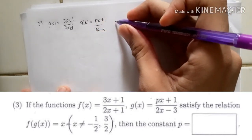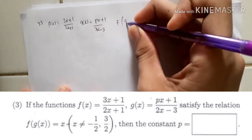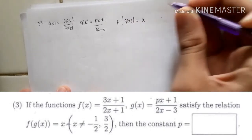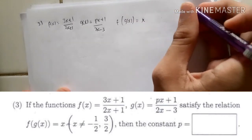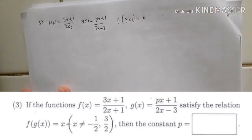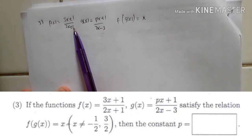They satisfy the relation f(g(x)) = x. You can see that there's a part where x is not equal to minus half and 3/2 — we just ignore that. In this type of function with a fraction, you cannot make the denominator equal to zero.